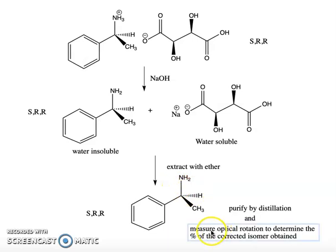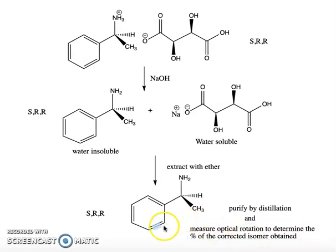By measuring the optical rotation, we can figure out how much we've enriched the product in the desired enantiomer.